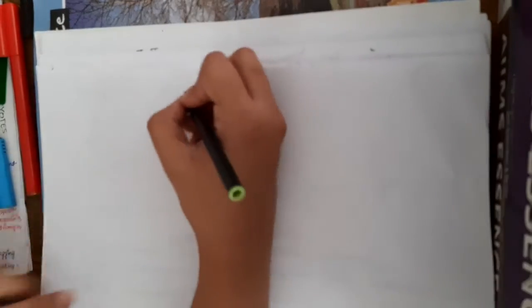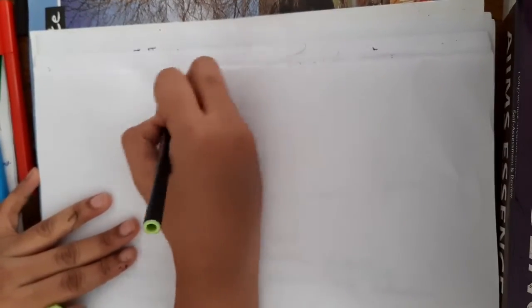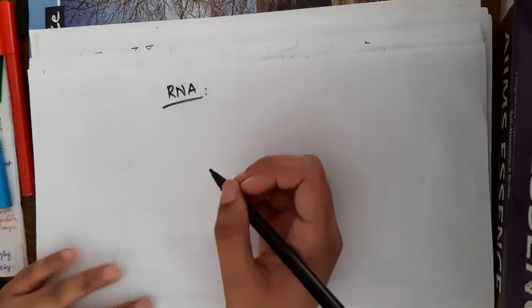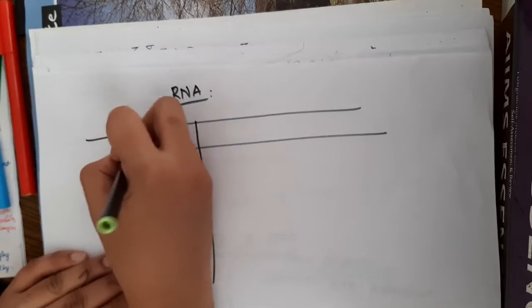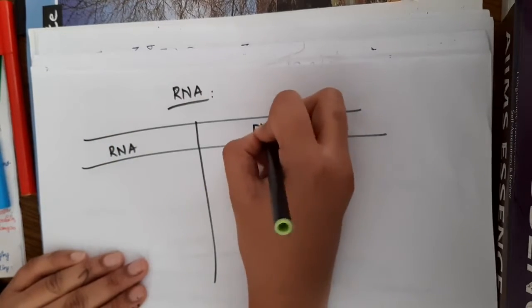Hello friends, let us now learn some important points about RNA. RNA is also a polymer of purines and pyrimidines linked by phosphodiester bonds. So first, let us now learn the differences between RNA and DNA.